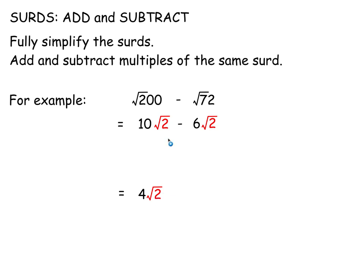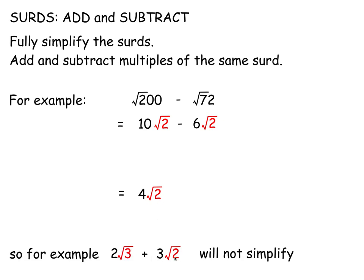The reason this works is that you factorise with common factor root 2, leaving 10 minus 6 in brackets, which is 4, giving 4 root 2. It's the same reason 10x minus 6x gives 4x — x is a common factor. So 2 root 3 plus 3 root 2 would not simplify because there's no common factor — they are different surds. Root 3s simplify with root 3s, root 2s with root 2s, but not with each other.